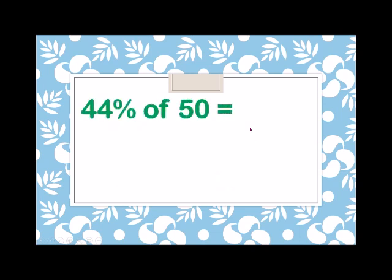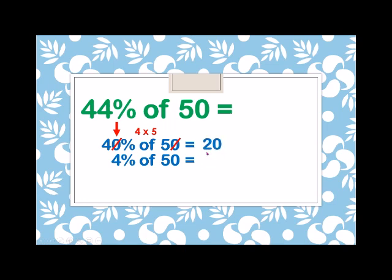Okay. Another example. What is the 44% of 50? Again, dividing 44% into two parts: 40% of 50 and 4% of 50. Canceling the zero from 40% and 50, we have 4 times 5 which is equals to 20.